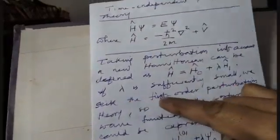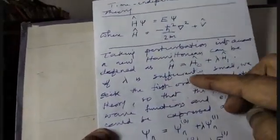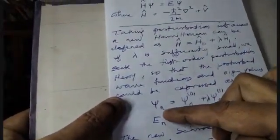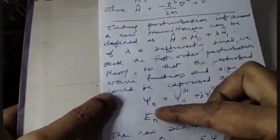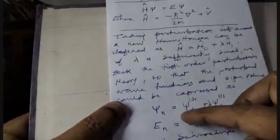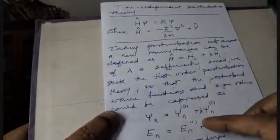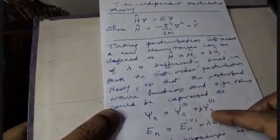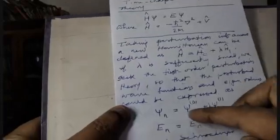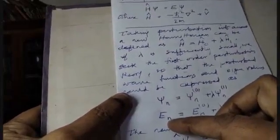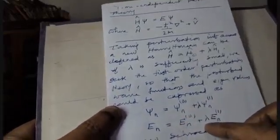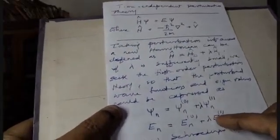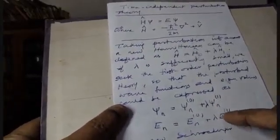If lambda is sufficiently small, the wave function psi-n — representing the nth state — can be expressed as psi-n0 plus lambda times psi-n1, where psi-n0 is the unperturbed wave function. Similarly, the energy eigenvalue en equals en0, the unperturbed energy, plus lambda times en1. We introduce these perturbation expansion terms.